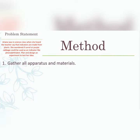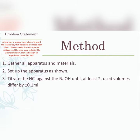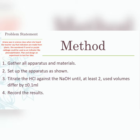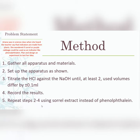For the method: first, gather your apparatus and materials, then set up the apparatus as shown. Titrate the HCl against the sodium hydroxide until at least two used volumes differ by no more than ±0.1 mL. To titrate means to add a solution from a burette to a solution in a conical flask until you reach an endpoint or equivalence point. Then record the results.